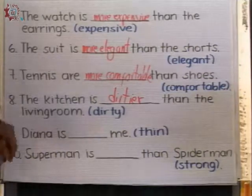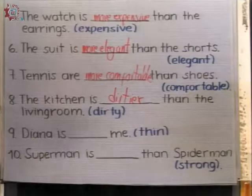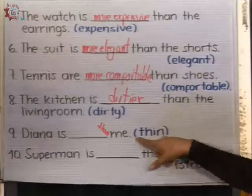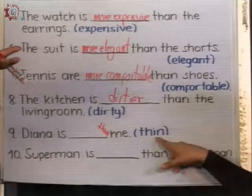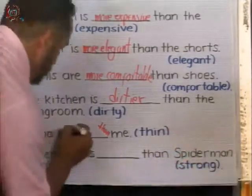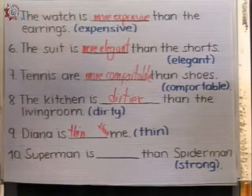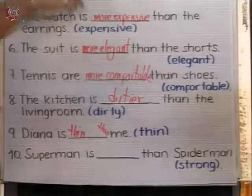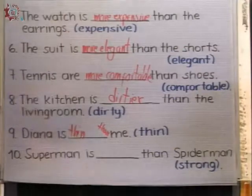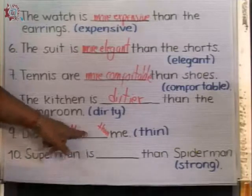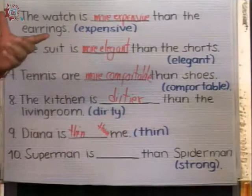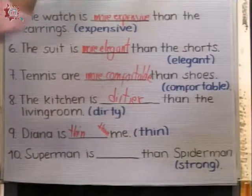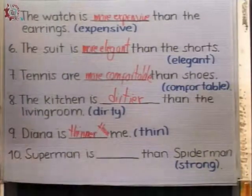Number nine: Vienna is ___ than ___ — adjective: thin. Is it long or short? It's a short adjective. But we have a problem: the stress. Consonante-vocal-consonante — hay un acento que nos hace recordar la regla. Thin — se va para arriba, duplicamos: double N, y agregamos -ER: thinner. Diana is thinner than me.